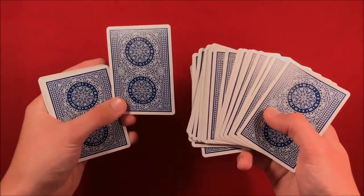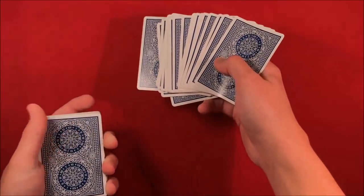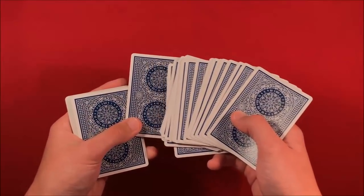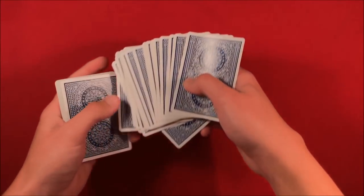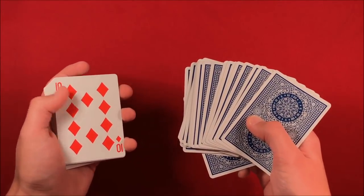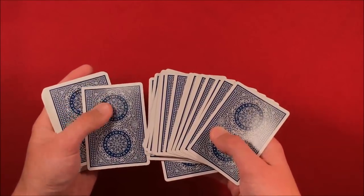The trick, guys, make sure that this is one of those types of tricks where the spectator isn't supposed to show you their card. So they take their card, they look at it - in this case, let's say we have a ten of diamonds - so they're going to be holding onto their ten of diamonds.